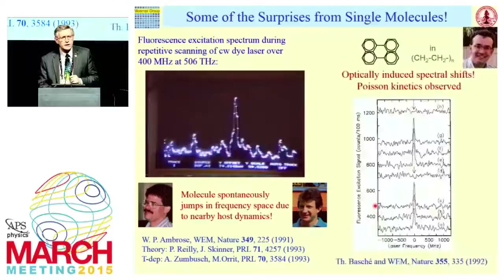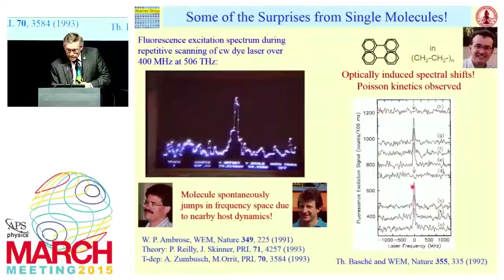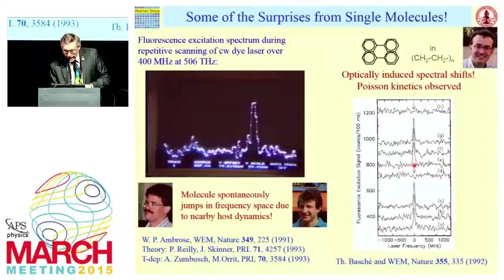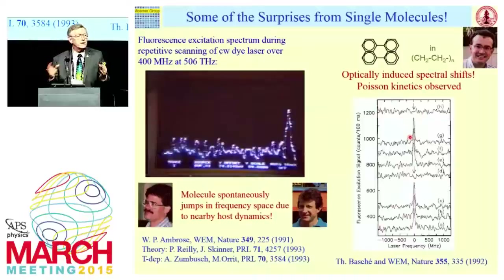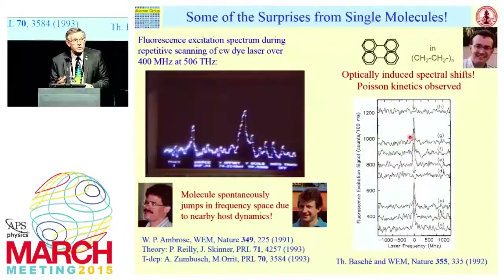Another surprise came from work by Thomas Bachet for perylene in polyethylene. With a single molecule scanned again and again — nothing happening — but then bringing the laser into resonance and sitting there for a moment, the molecule is gone, moved somewhere else in frequency space. Wait a little while, it comes back at the same frequency. We could drive the molecules back and forth with light — using light to control the molecules. Given that this is the International Year of Light, I'm very happy to talk about this kind of work.